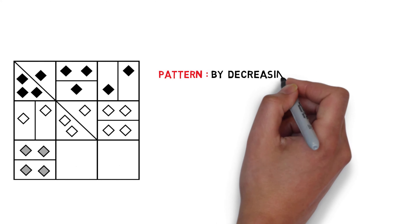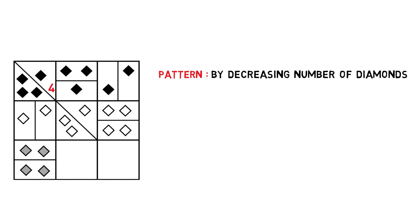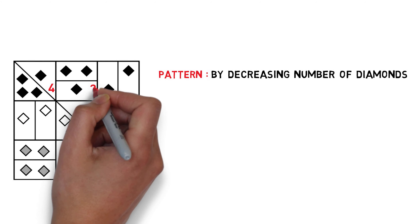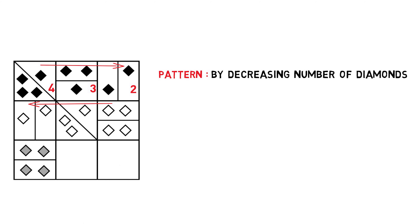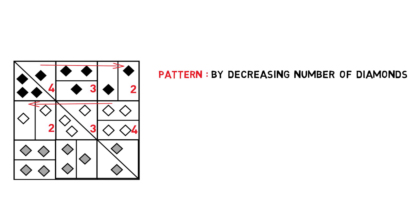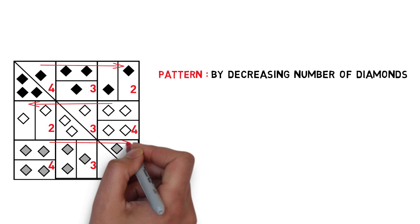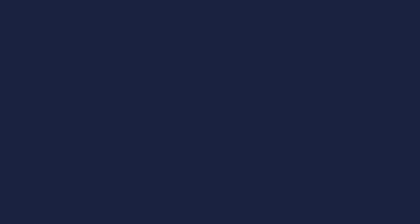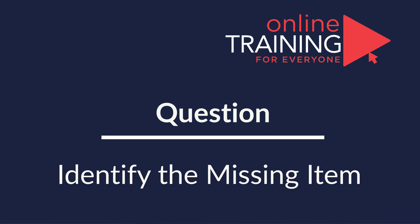The pattern is represented in each row by a decreasing number of diamonds. In the top row, the left square has 4 black diamonds, the middle has 3, and the right has 2. In the second row, the pattern reverses right to left with white diamonds: 4, 3, 2. So in the bottom row, the same decreasing pattern applies with grey diamonds, going from 4 to 2. The correct answer is choice A.